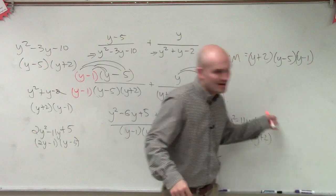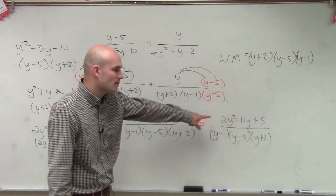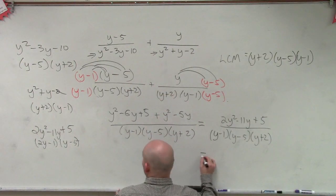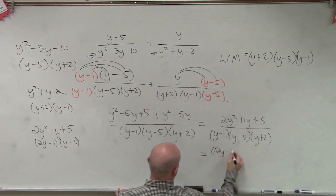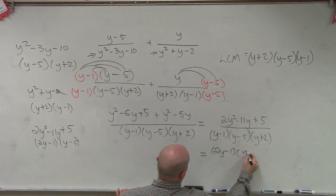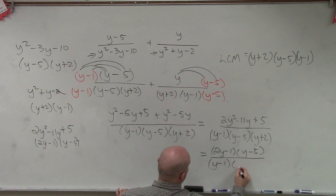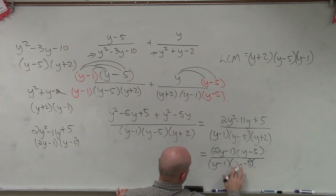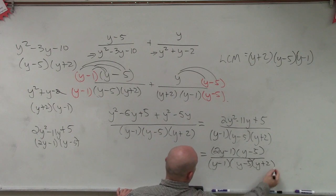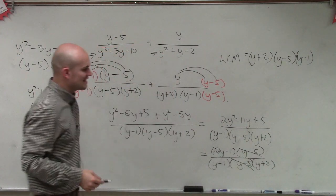So if you wrote it here, guys, you're very, very close, all right? However, we just need to understand, we can factor this one more time, which would give us 2y minus 1 times y minus 5 over y minus 1 times y minus 5 times y plus 2, which is important in this case, because now the y minus 5's cancel out.